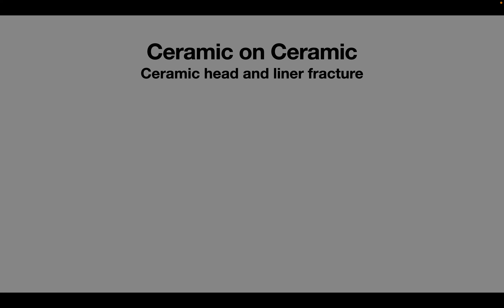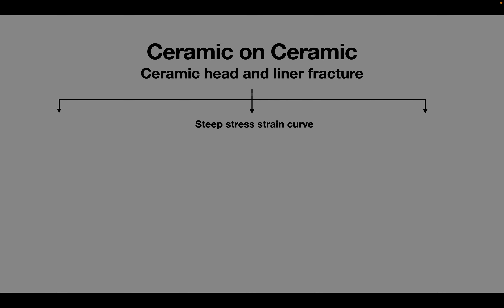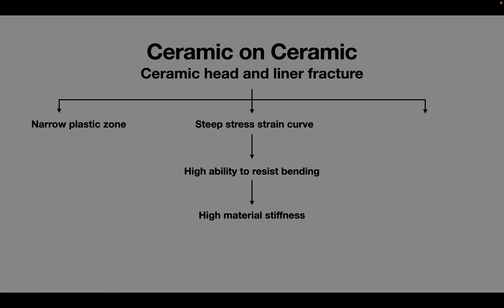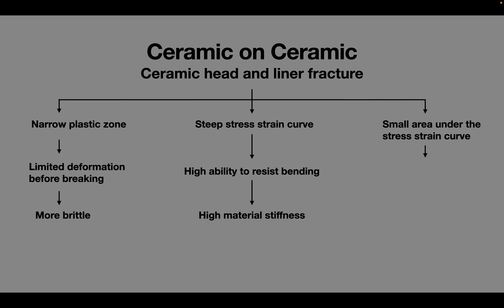In order to understand why ceramic heads and liners fracture, we need to know three of its material properties. Ceramic has a steep stress-strain curve, meaning it has a good ability to resist bending and is considered a stiffer material. The stress-strain curve of ceramics has a very small plastic zone, meaning it hardly ever undergoes plastic deformation before breaking — therefore, it is a brittle material. The area under the stress-strain curve represents material toughness. The area under the stress-strain curve of ceramic is small, indicating it has limited ability to resist cracking and is therefore not a tough material.